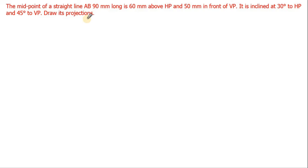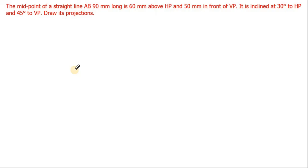If you neglect the word 'midpoint' and read the problem, it looks like a normal problem. But here it is specifically stated that the midpoint of the straight line is 60 mm above HP. In previous problems, it was given that point A is 60 mm above HP, but here the midpoint is 60 mm above HP. Similarly, the same midpoint is 50 mm in front of VP.